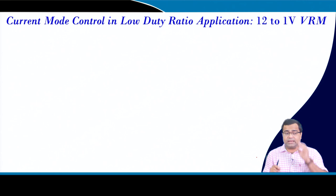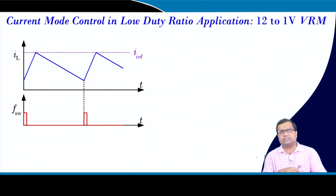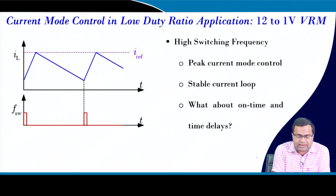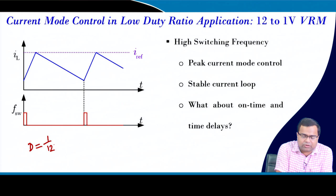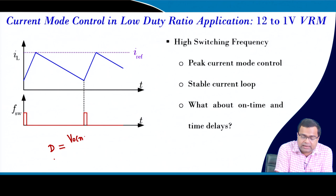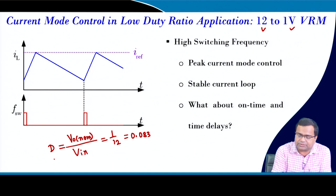In many low-voltage high-current applications such as voltage regulator modules with 12V input and 1V output, we use peak current mode control. The duty ratio D = V_out/V_in = 1/12 ≈ 0.083. At 1 MHz switching frequency the switching period is 1 microsecond, so the on-time is D×T_SW ≈ 83 nanoseconds.